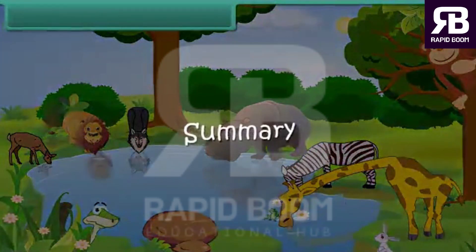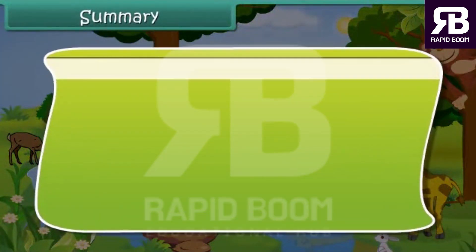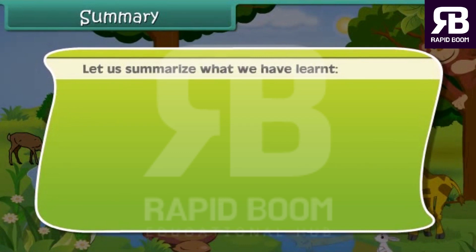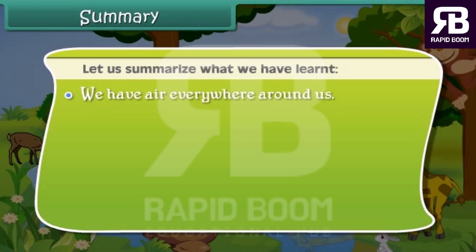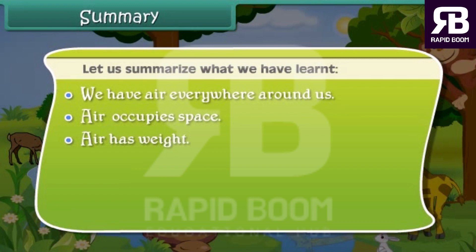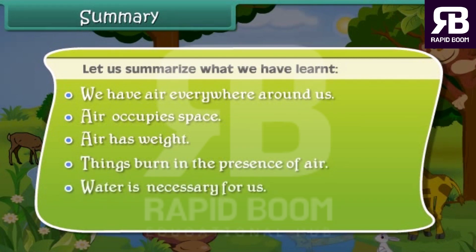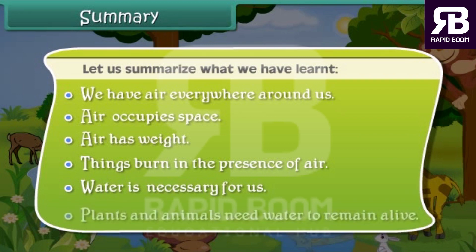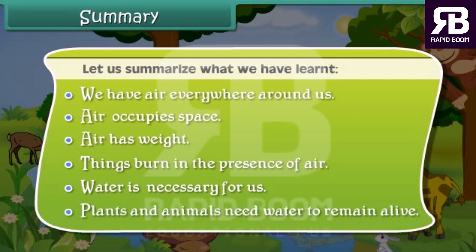Let us summarize what we have learnt. We have air everywhere around us. Air occupies space. Air has weight. Things burn in the presence of air. Water is necessary for us. Plants and animals need water to remain alive.